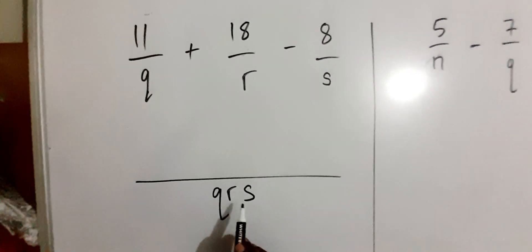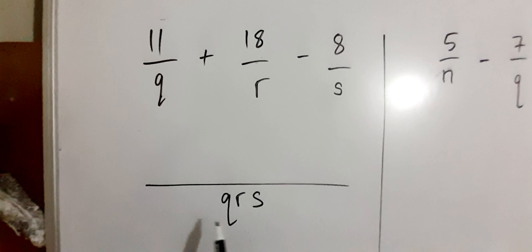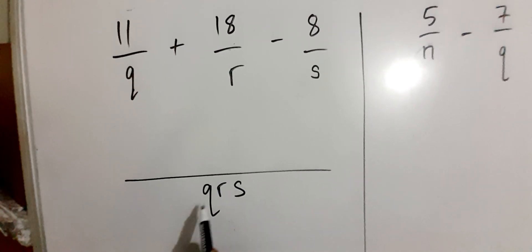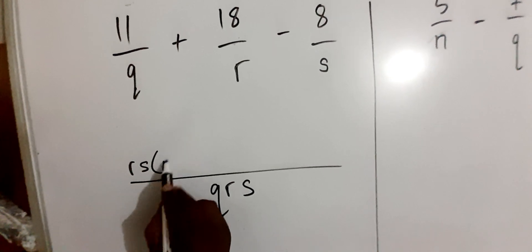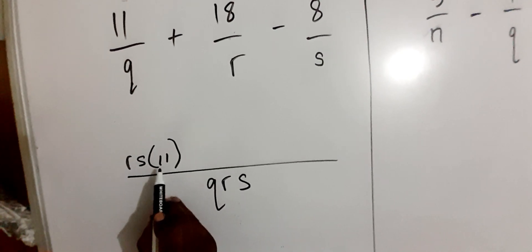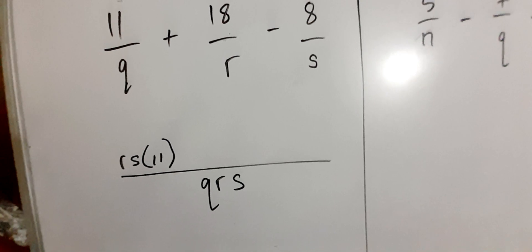Now Q into QRS, obviously the Q will cancel the Q, leaving us with RS. So we're going to say RS multiplied by 11, but normally we start with saying 11RS, we'll rearrange that in the next layer.